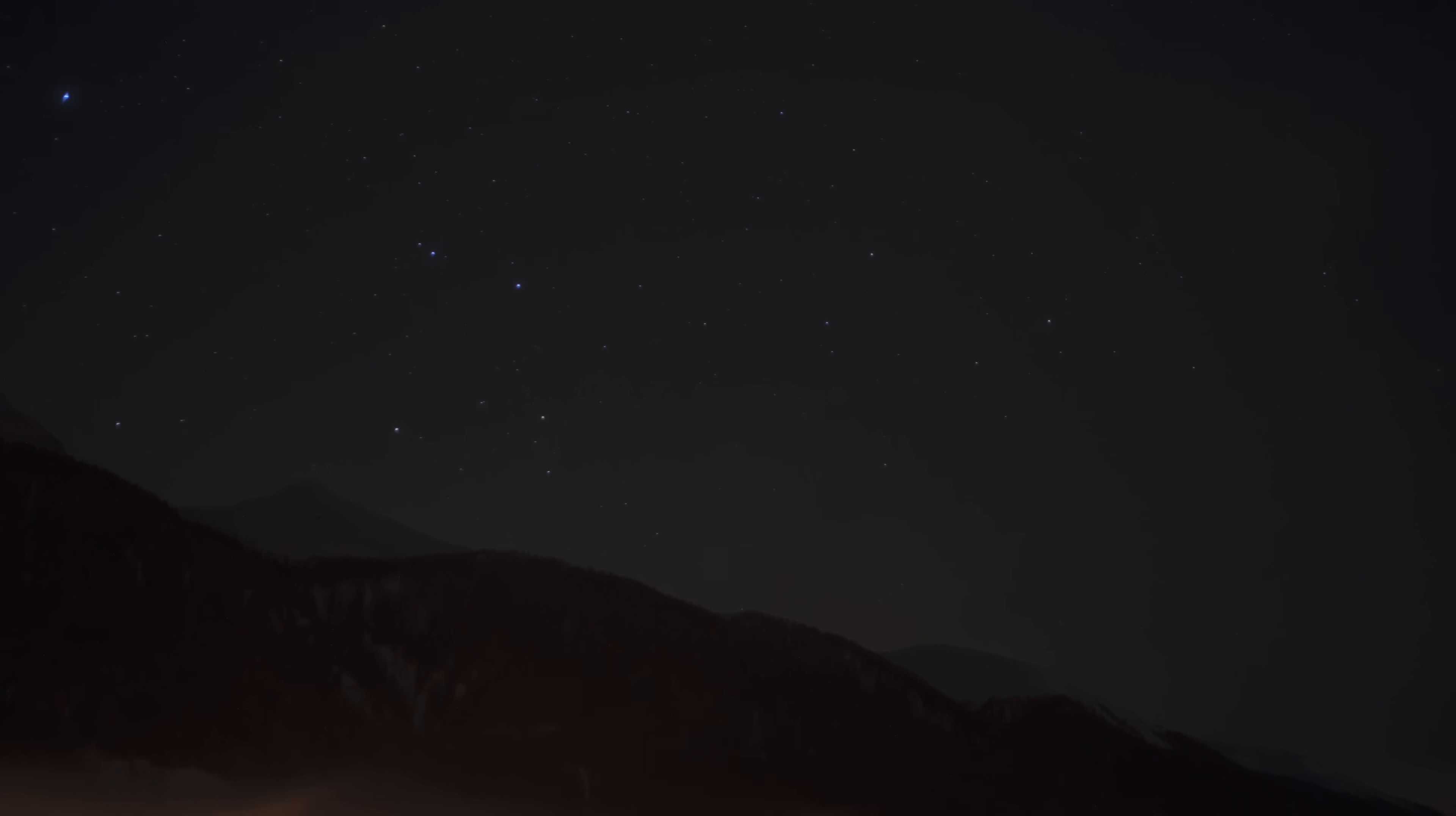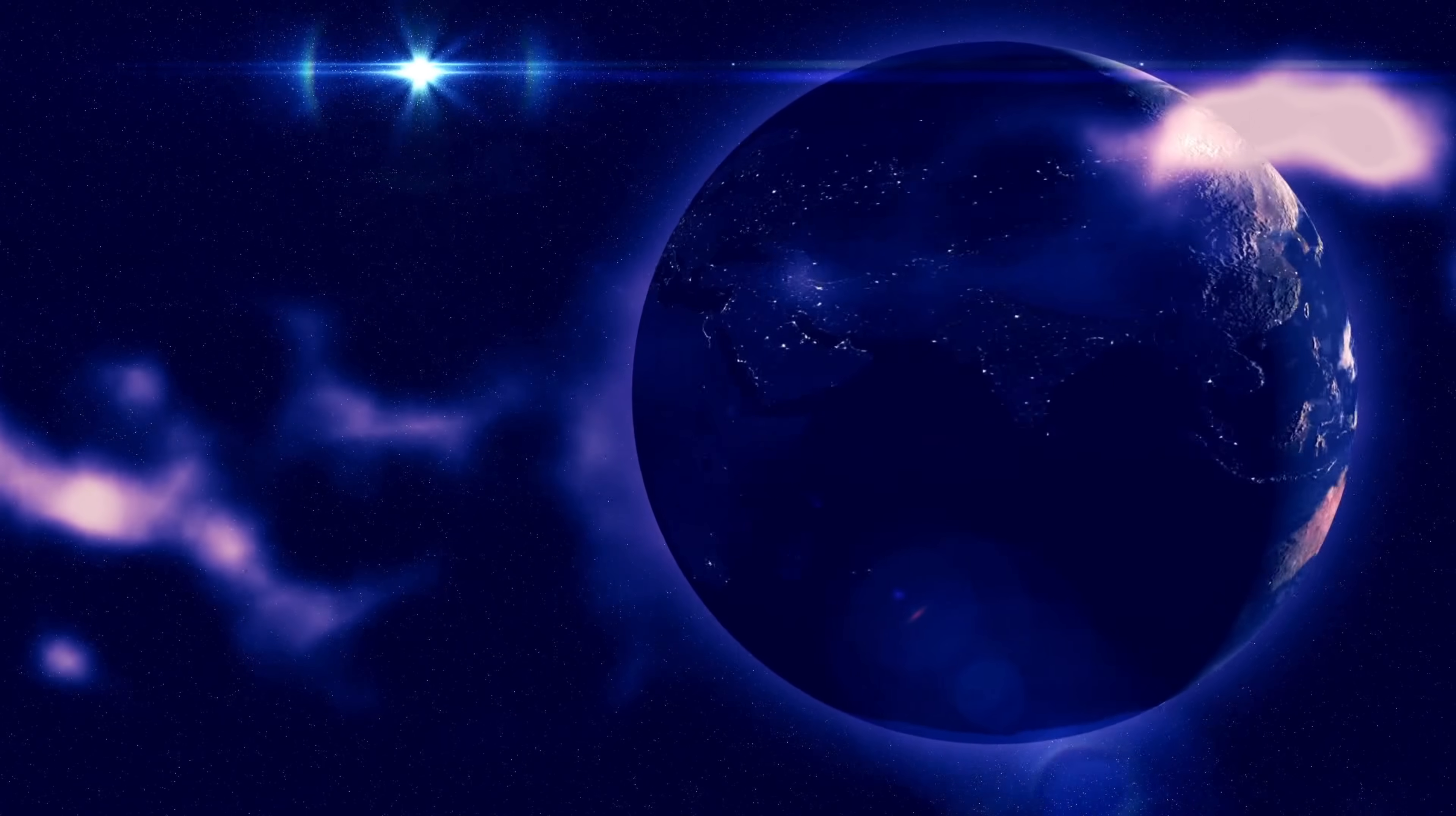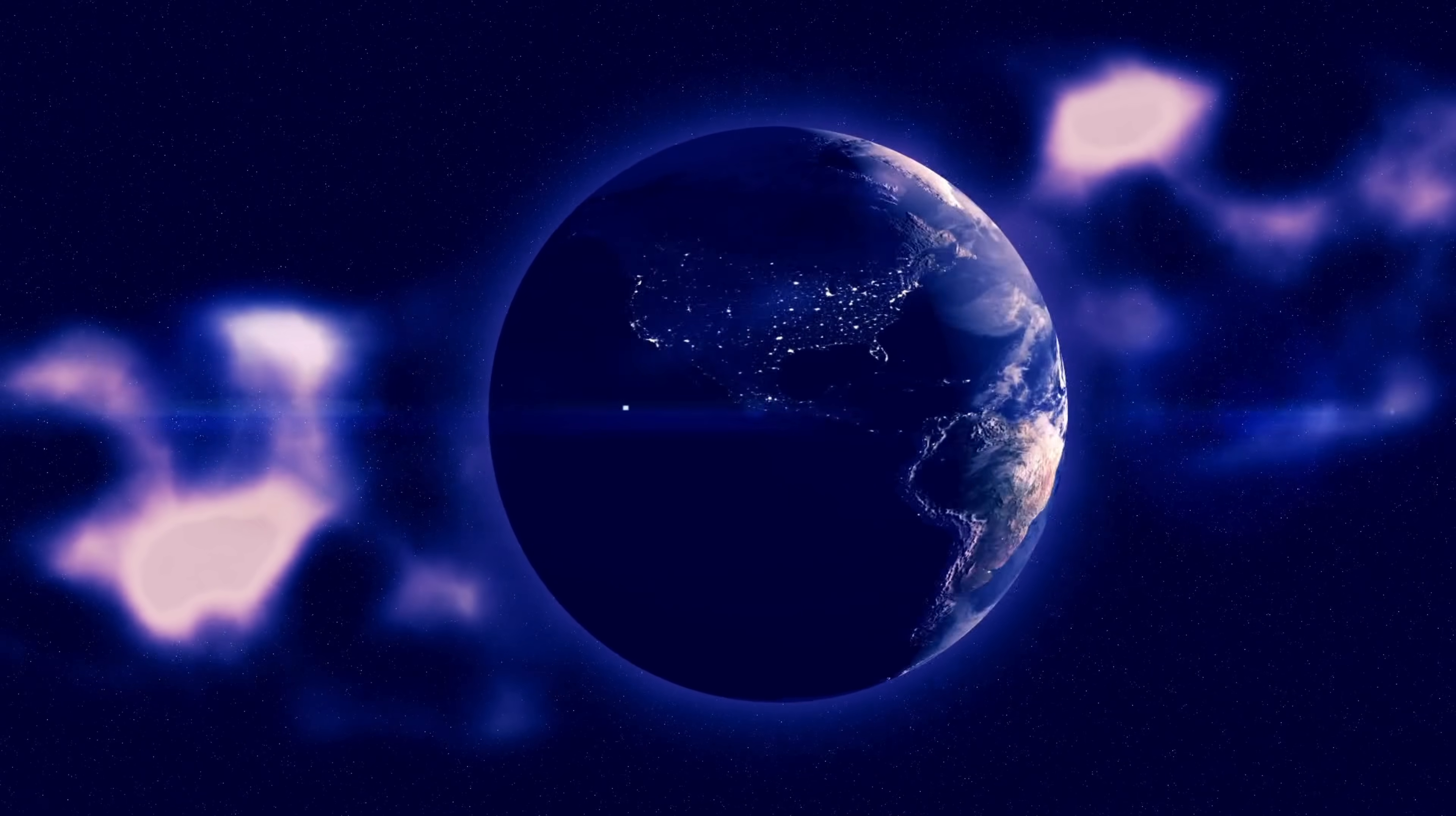But the true disaster arrives at that same moment. Along with light, the sun's gravity also stops reaching us. Earth is released from its orbit instantly. No longer bound to the sun, our planet shoots forward in a straight line, 30 kilometers per second, into the cold emptiness between the stars. Earth becomes a runaway world, a cosmic orphan drifting into the unknown.